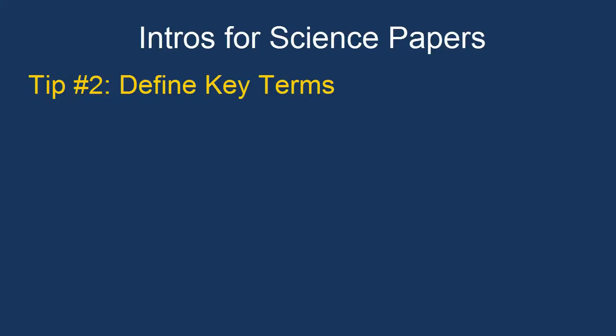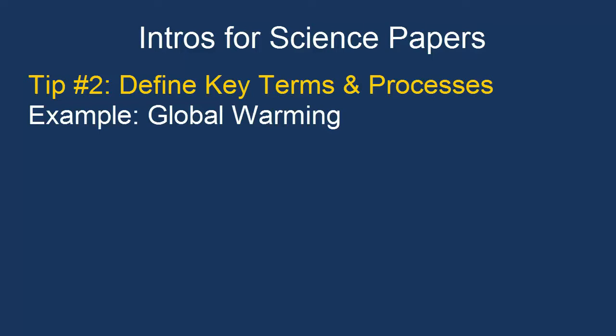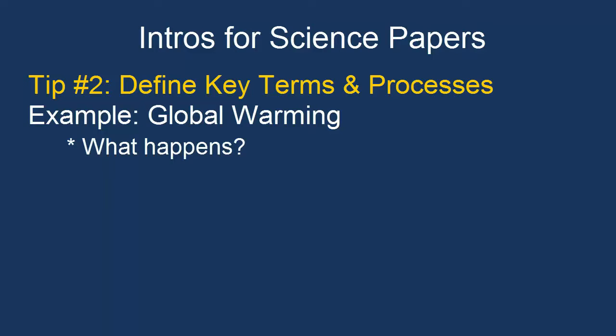Another good tip is to use the intro to establish and define any key terms that will be necessary for the reader to critically understand your topic. For example, a paper on global warming would need to give the reader a brief overview and reminder of the mechanics and process of global warming — what happens, how does it happen, how and why is this a problem? Use that opening paragraph to very quickly establish and remind the reader of any scientific information behind your topic that will be necessary for the more critical, in-depth exploration that's going to come in the body paragraphs.